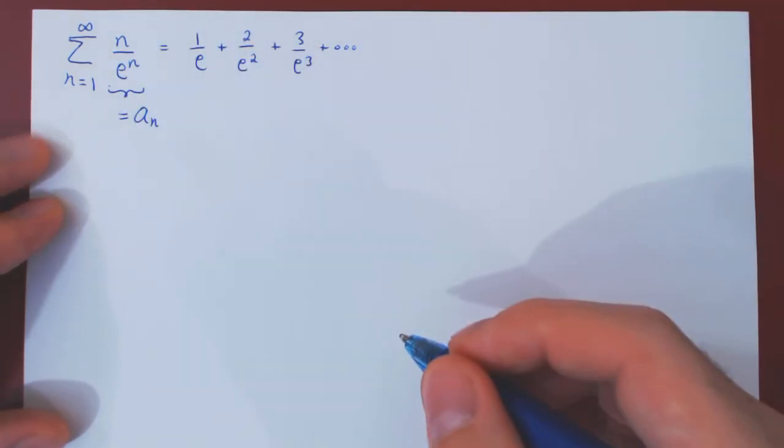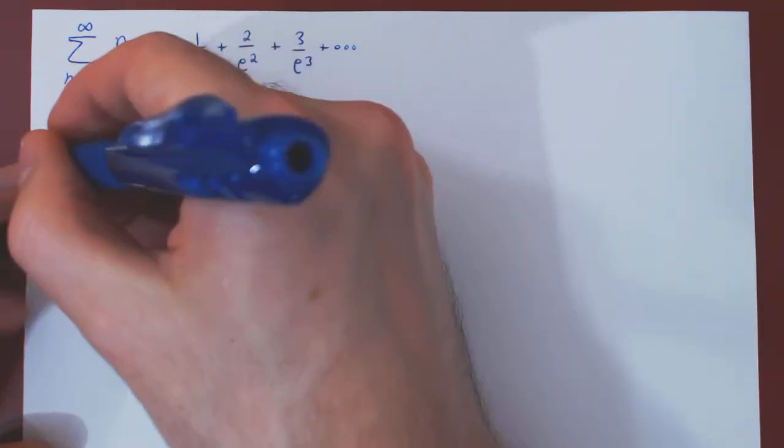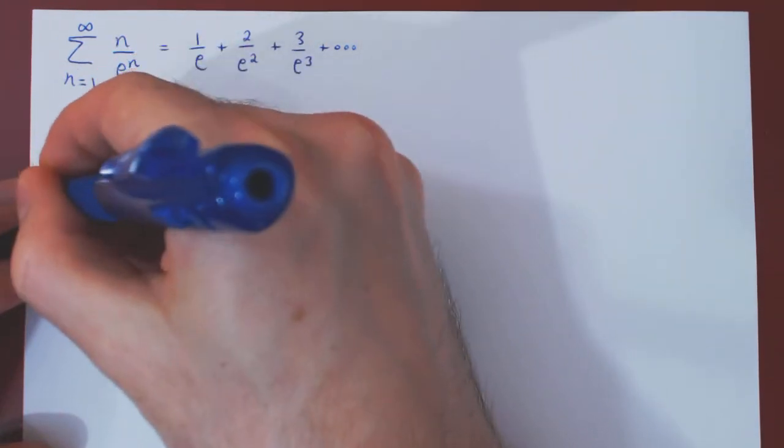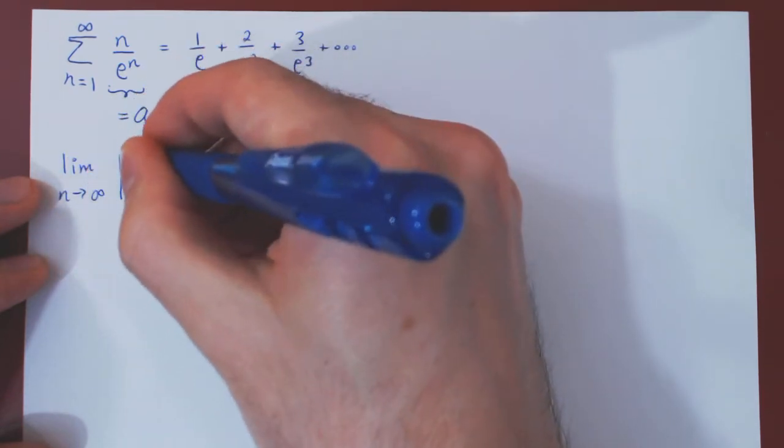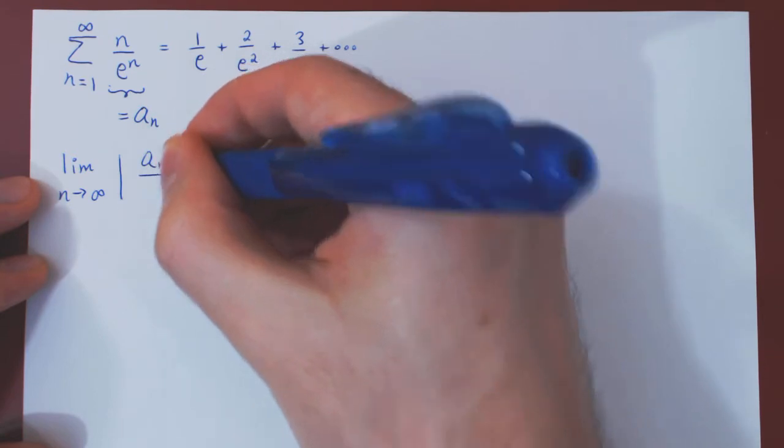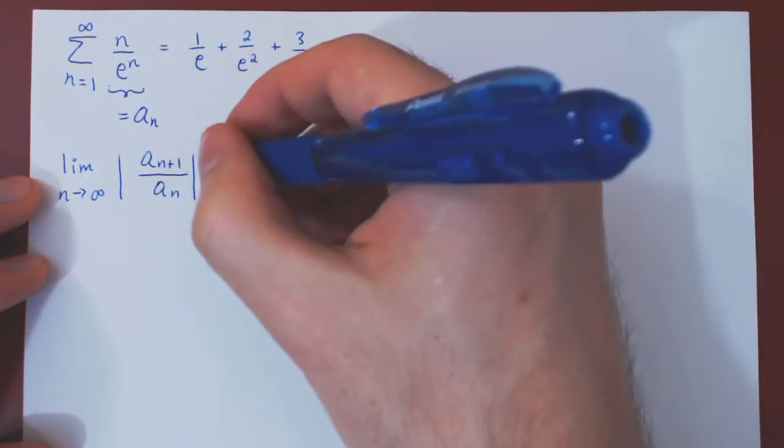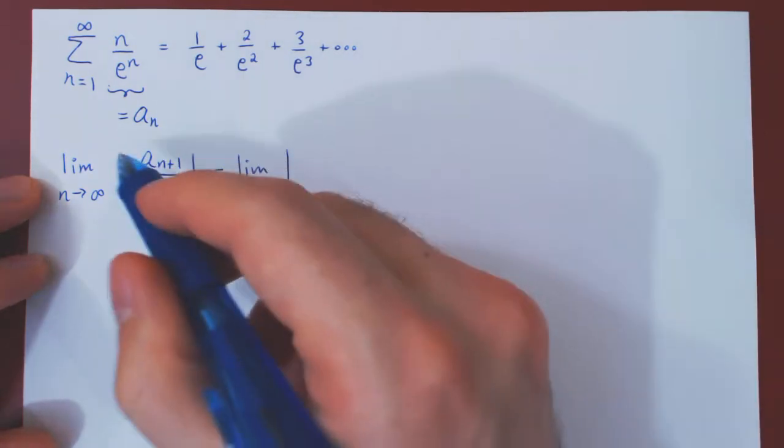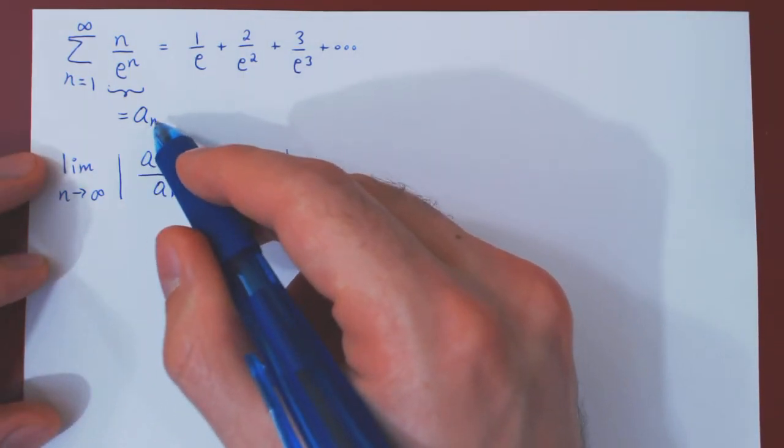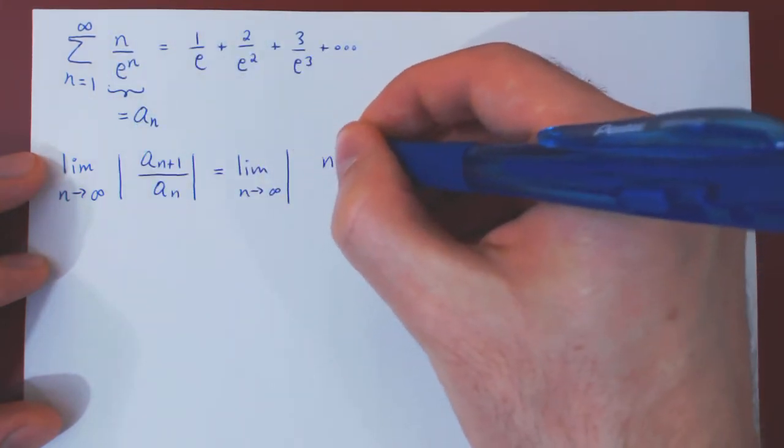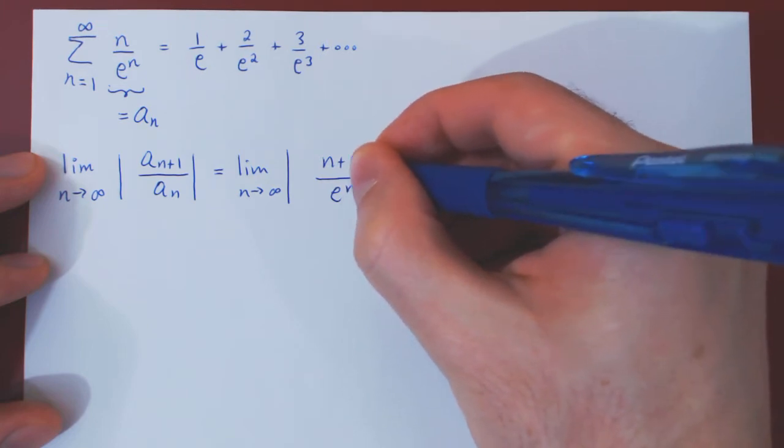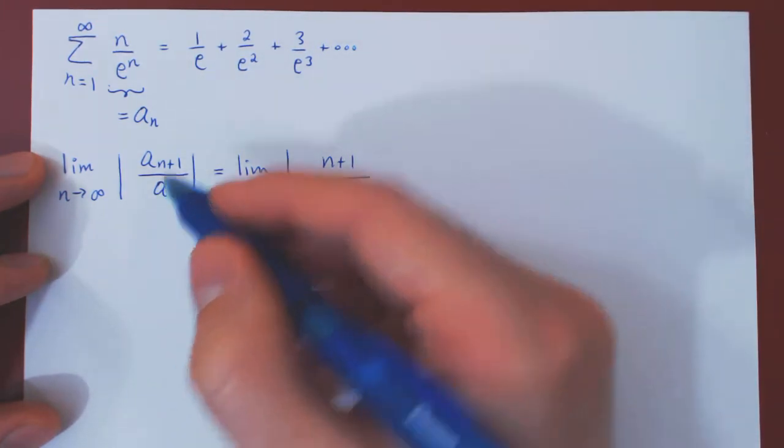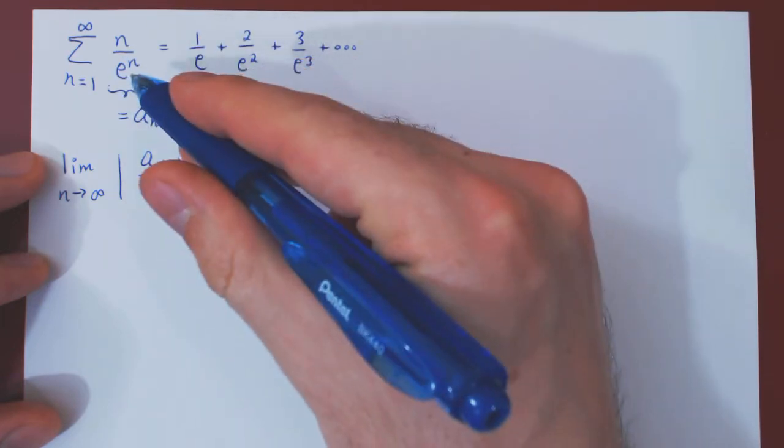So the terms we are summing over are of the form n over e to the n. This is our a_n, the sequence of terms we are summing over. And if you recall, the ratio test says to look at the limit as n tends to infinity in absolute value of a_(n+1) over a_n. And now we can substitute. A_(n+1) is the (n+1)th term of our sequence, so we have to replace n by n+1, which will give us (n+1) over e to the (n+1). And as we are dividing by a_n, we are simply multiplying by the reciprocal of a_n, which is e to the n over n.